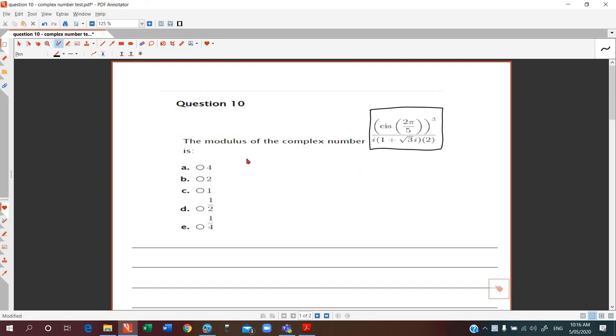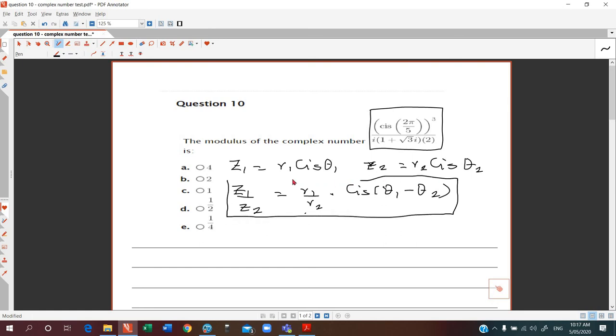You have a numerator and you have a denominator. Let me write the formula. If z1 is r1 cis θ1 and z2 is r2 cis θ2, then the formula that you should know from the textbook is z1 on z2 equals r1 divided by r2 times cis(θ1 minus θ2). This formula has come from de Moivre's theorem. You can refer to that in your textbook.